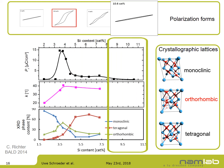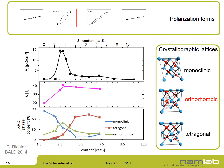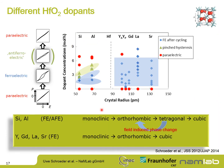Looking at different dopants ranging from silicon and aluminum — which are smaller than hafnium — to yttrium, gadolinium, lanthanum, and strontium, which are larger in atomic radius: plotting dopant concentration versus crystal radius shows that for dopants smaller than hafnium, there is only a small range with ferroelectric properties (blue dots), whereas for larger dopants there is a much wider concentration range exhibiting ferroelectric behavior. These properties coincide with specific phases of the material.